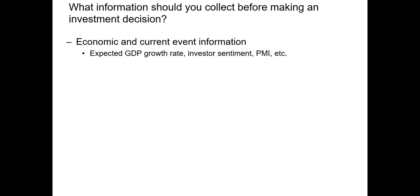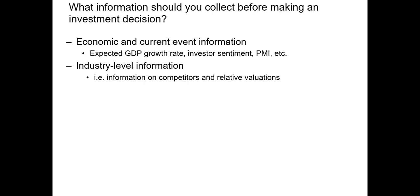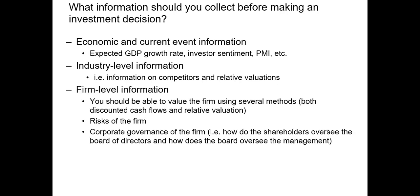When we're determining whether to invest in a security we want to have as much information as possible. We break that information into three groupings: economic or macro level information, industry level information, and firm level information.